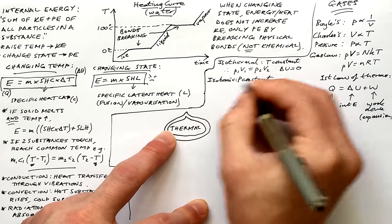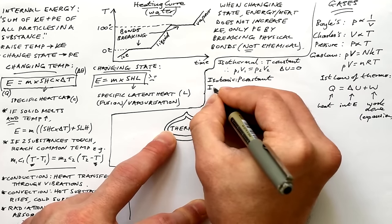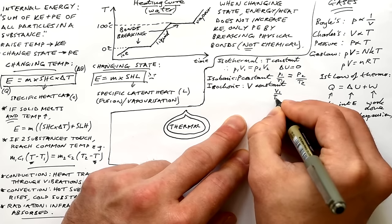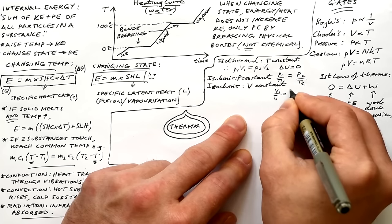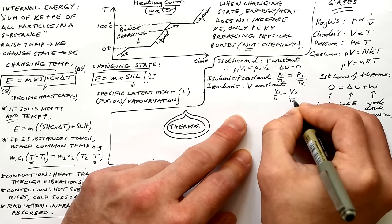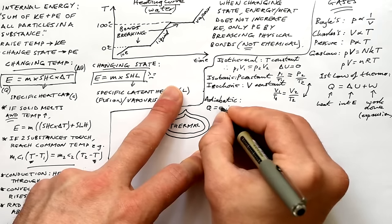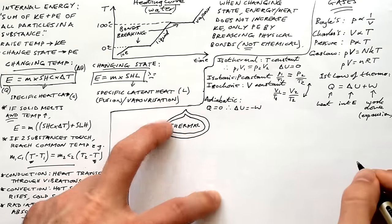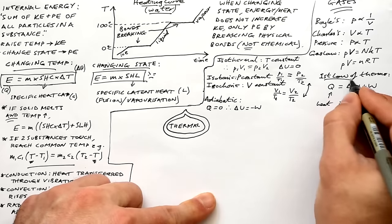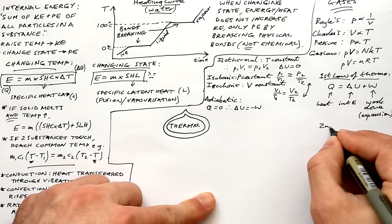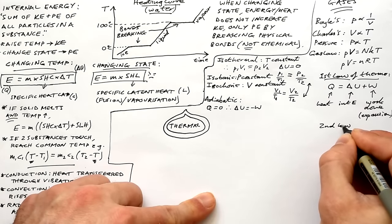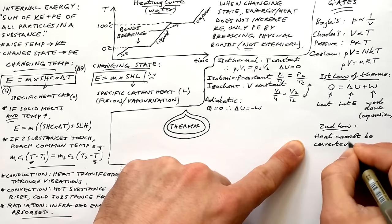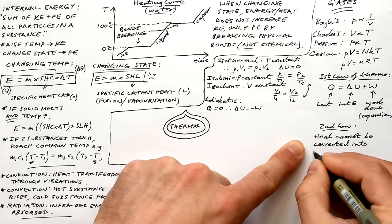Isobaric — pressure is constant. Isochoric — volume is constant. We can create proportionality equations similarly for those two. Adiabatic is when there is no heat in or out of a system, so Q equals zero, meaning delta U equals minus W. It's not PV that's constant this time but PV to the power of gamma, gamma being the adiabatic constant — you'll always be given that.